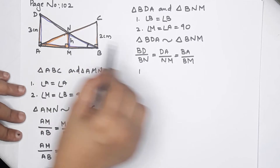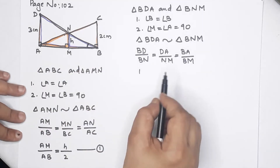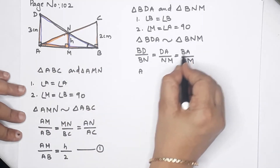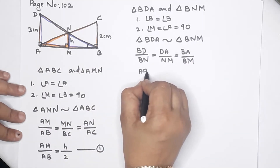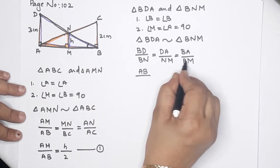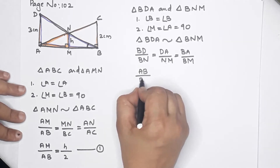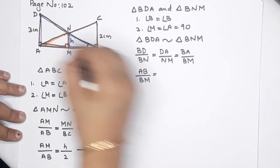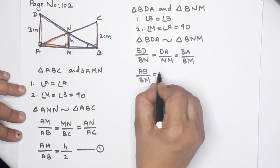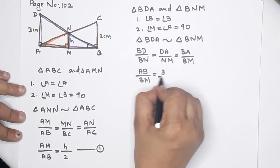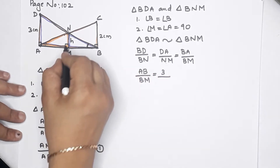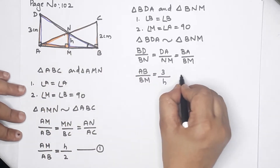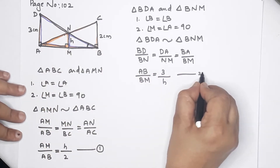We will write AB by BM equals DA, which is equal to AD. AD is 3 centimeters, so 3 by NM, and this is H. This is equation number 2.